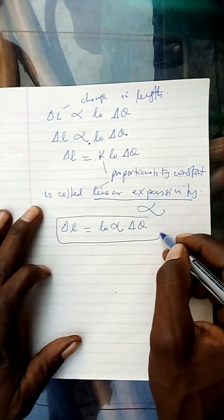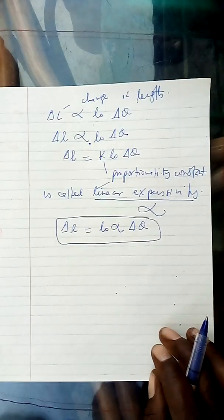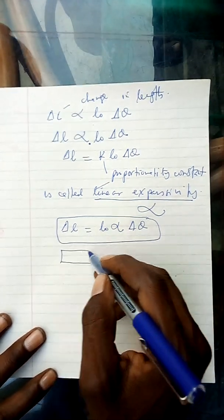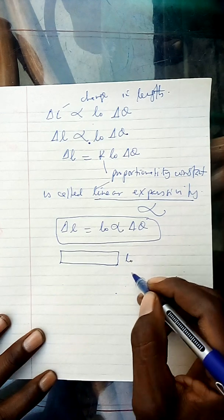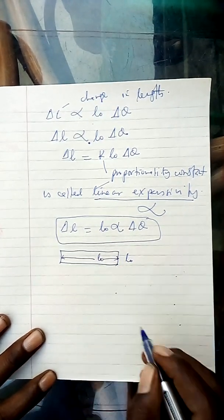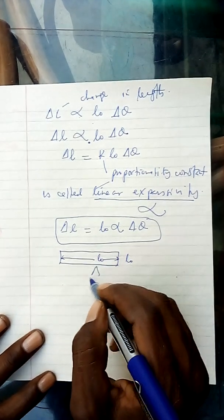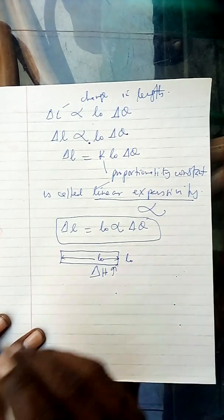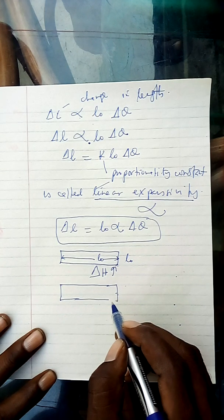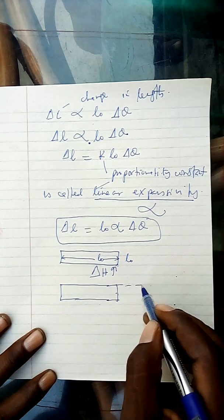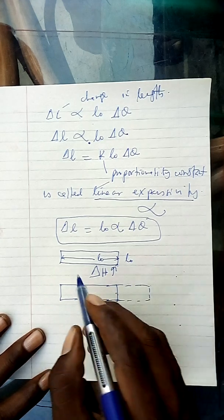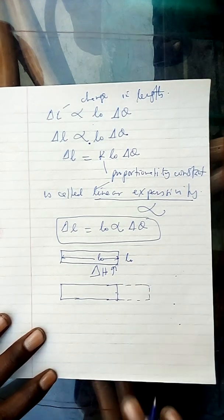This is the formula used to obtain the change in length. But remember, if you are heating a substance — before it was L0, meaning the length from here up to here is L0, the original length. But once you apply heat to the substance, it may increase from the original. This is what it has increased.